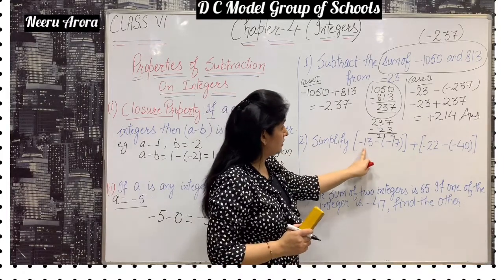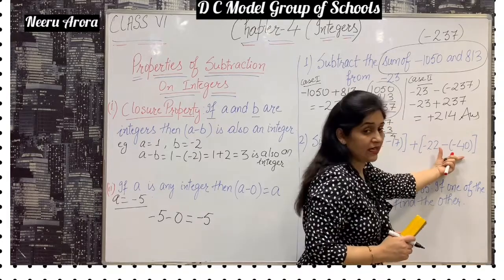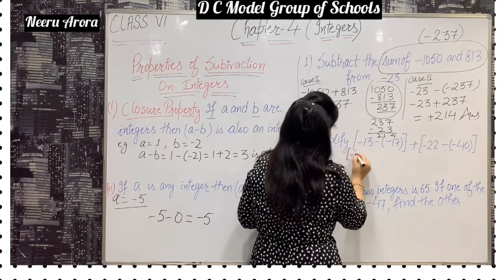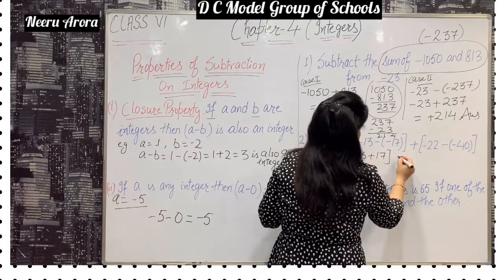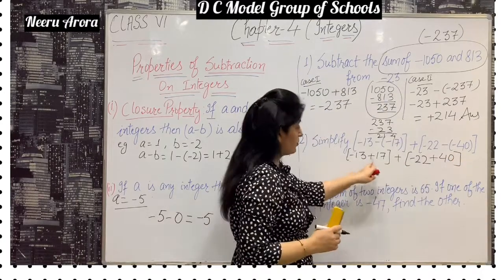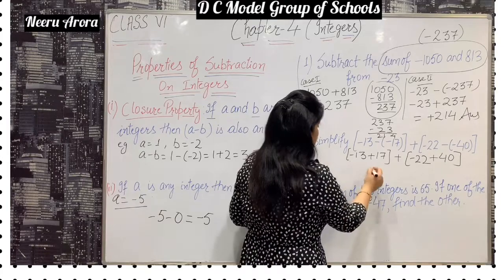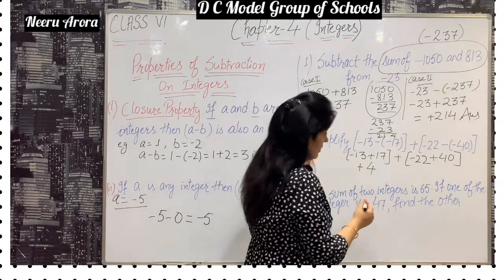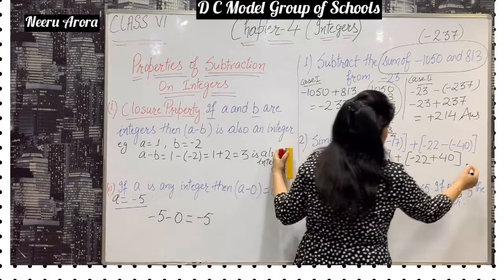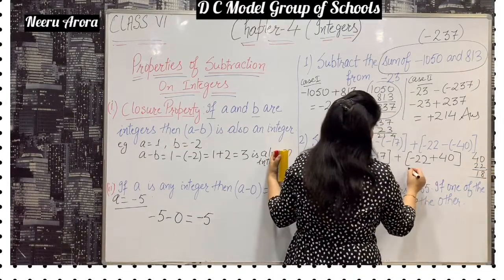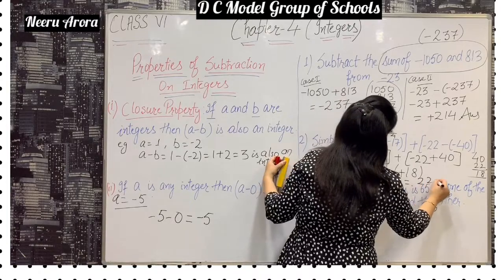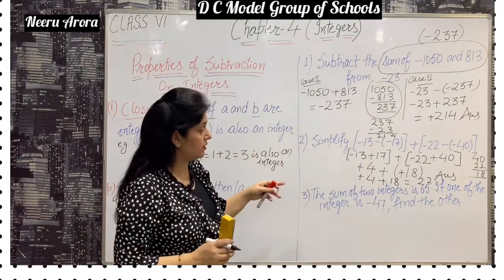Simplify this. First simplify the first bracket, then simplify the second bracket, and then find out their sum. Minus 13, minus minus is plus. Again minus 22, minus minus is plus. So we have two opposite signs, we subtract: 17 minus 13 is 4, sign of the bigger term comes. Then we subtract 40 and 22, we get 18 with a positive sign. So plus 4 plus 18 is 22. After simplifying both terms we get 22.